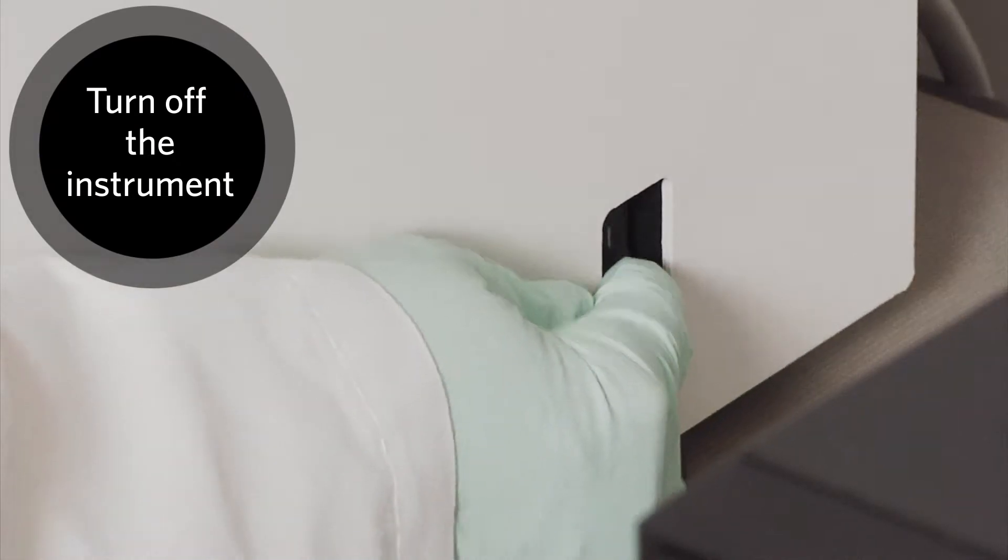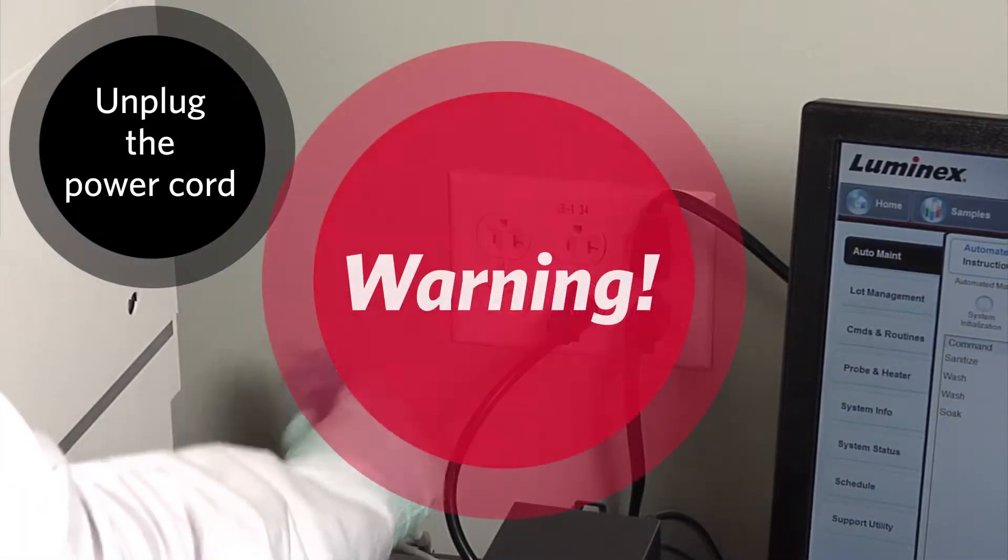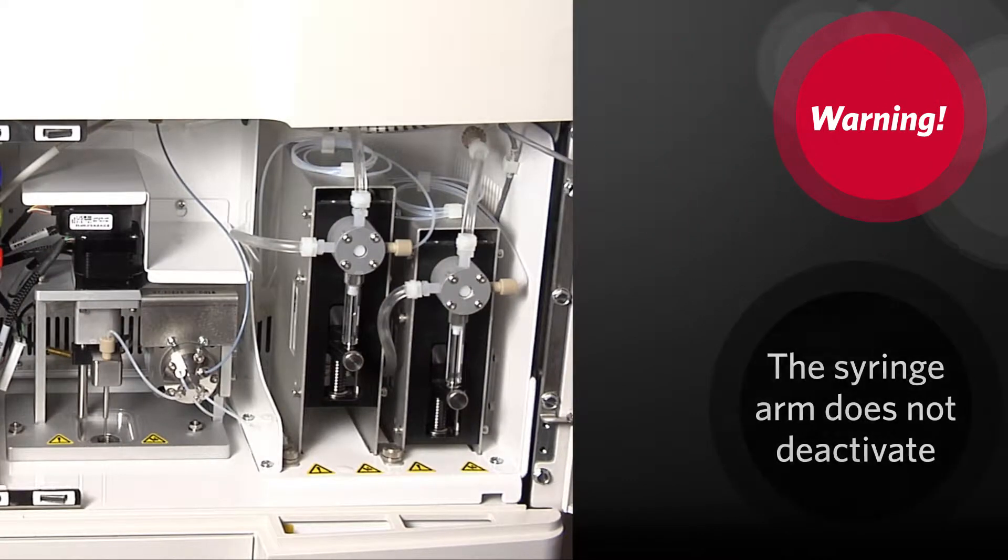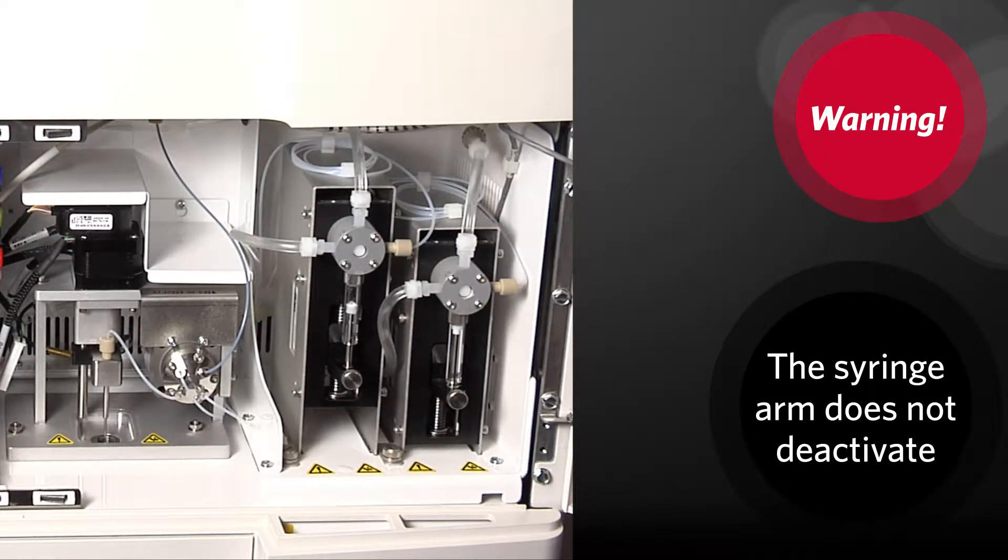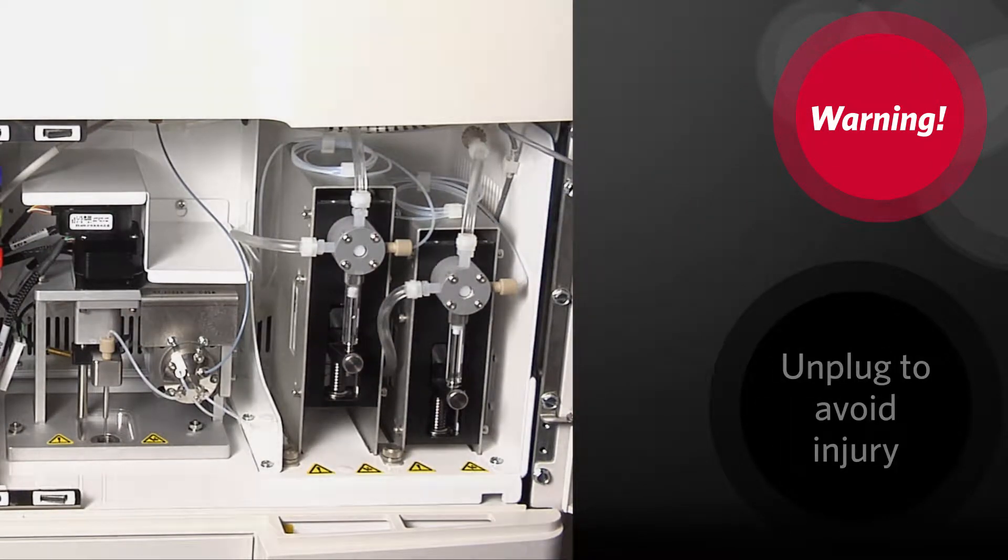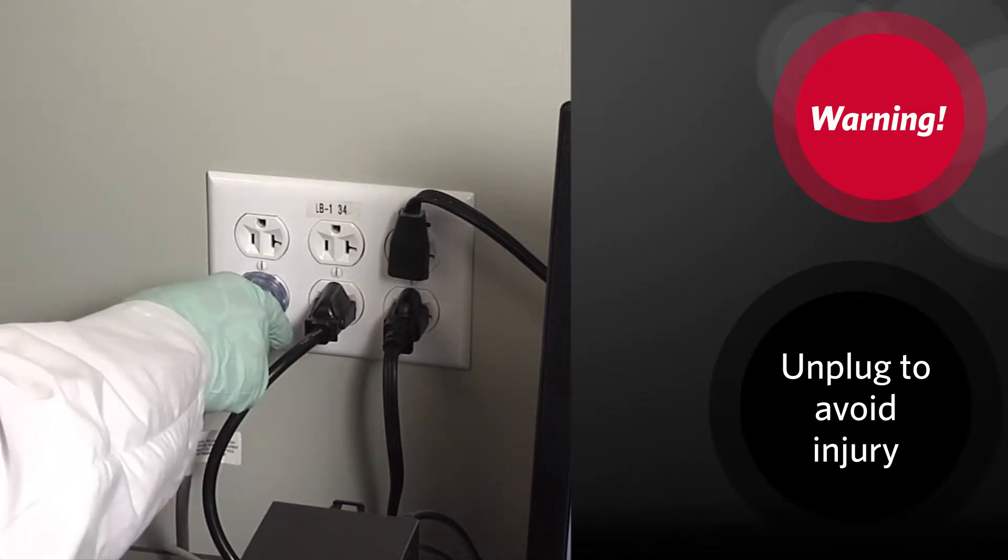Here's how to replace the syringe seal. Turn off the FlexMap 3D instrument and unplug the power cord. Warning, the syringe arm does not deactivate while the seal is being changed. Unplugging is necessary to avoid injury.